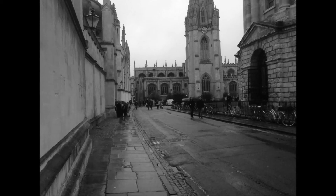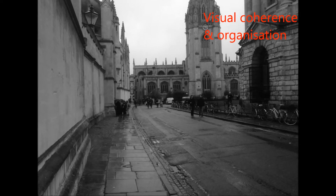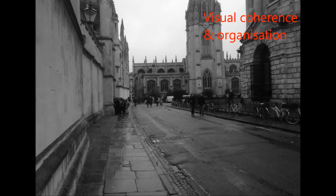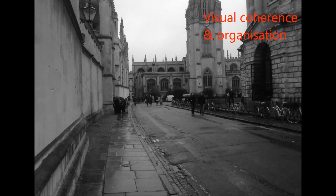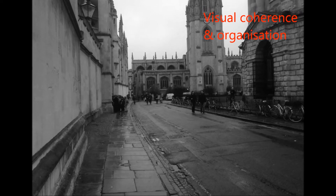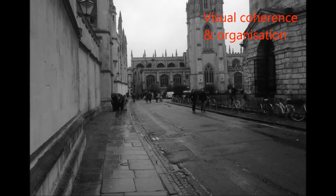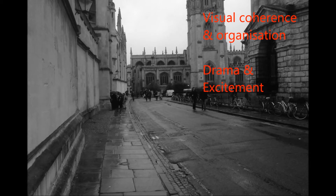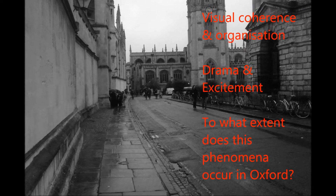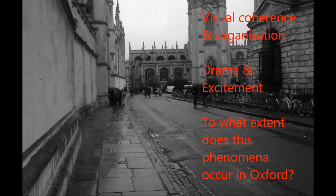Townscape is defined by Cullen as the process of giving visual coherence and organisation to the various different layers that make up the urban environment. If these elements are arranged correctly, they can release drama and excitement. Therefore, the aim of this project is to analyse to what extent this phenomenon occurred.